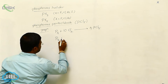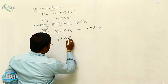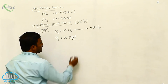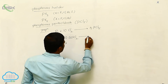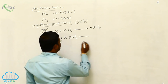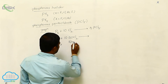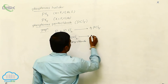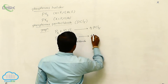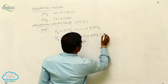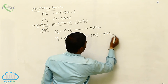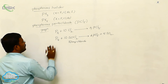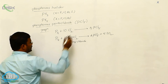Similarly, white phosphorus, when reacted with thionyl chloride (SOCl2), produces 4 PCl5 plus 5 SO2. This is the preparation of phosphorus pentahalide.